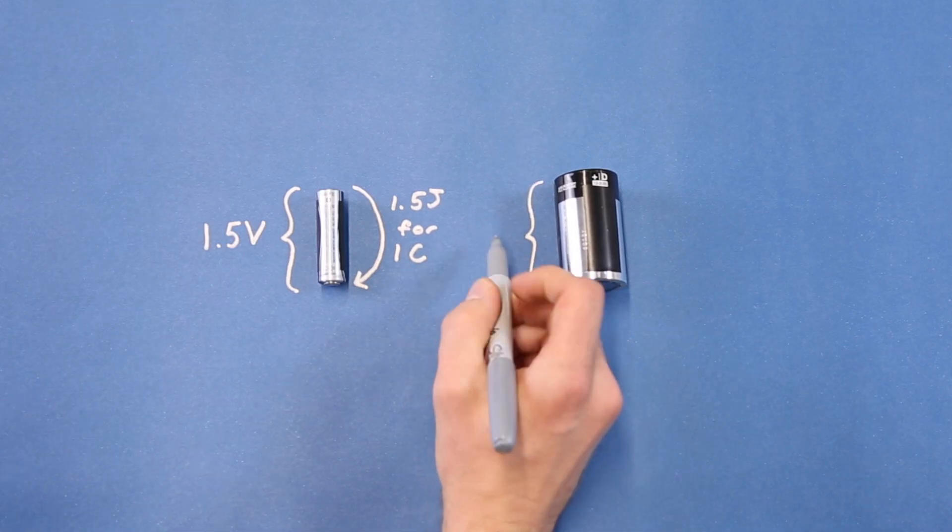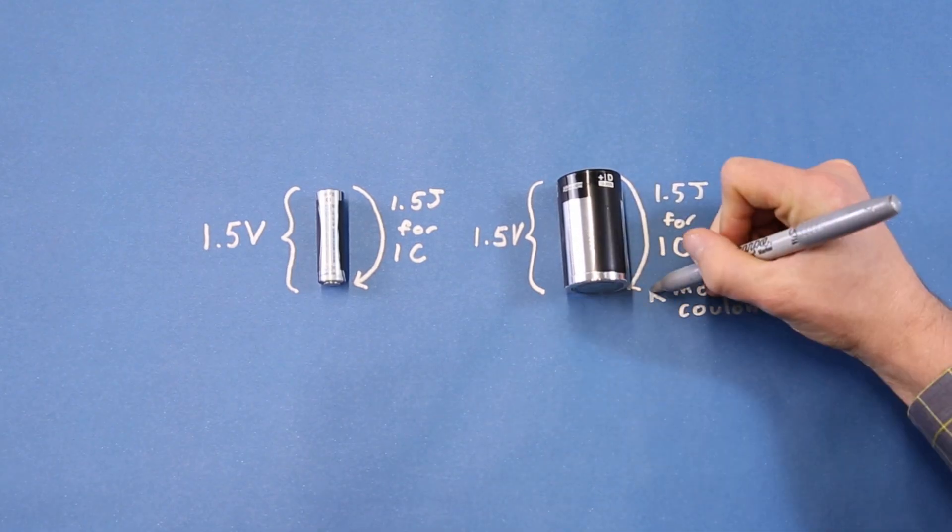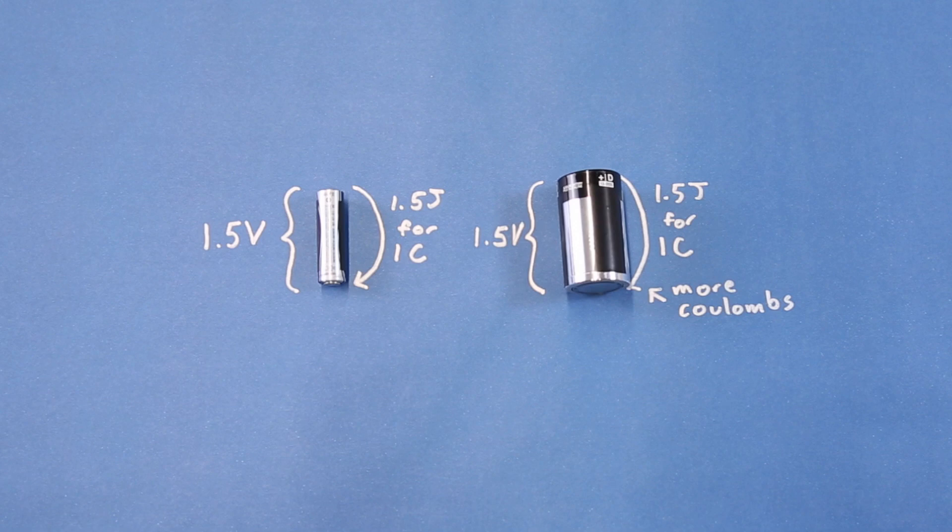Now, compare that to a much larger D-cell battery. Each coulomb of charge will still only do 1.5 joules of work, but a D-cell has far more coulombs of charge than a AA. As a result, D-cells will last a lot longer than AA batteries, doing the same amount of work.